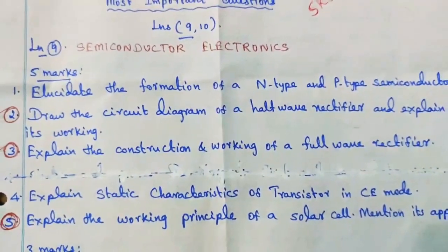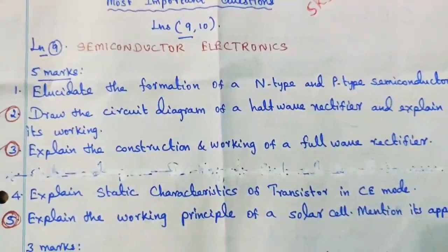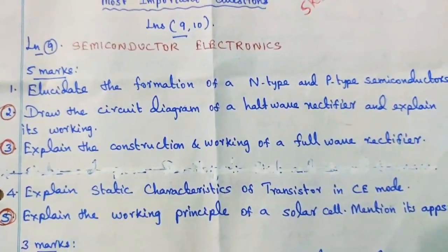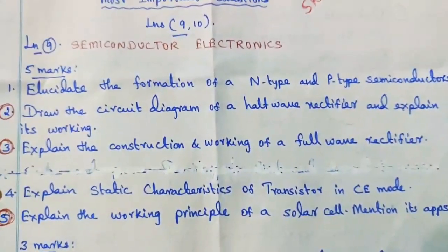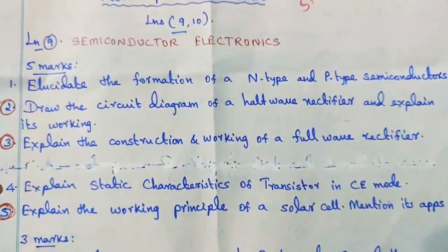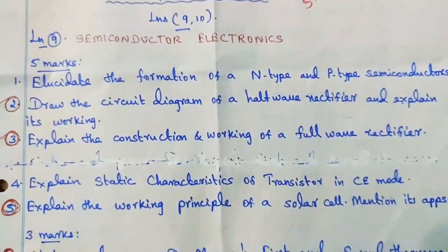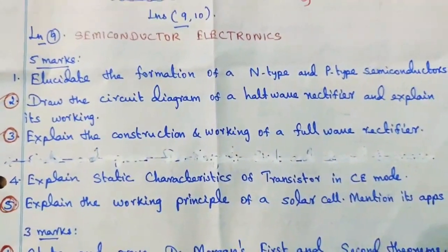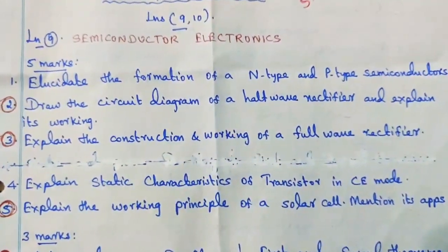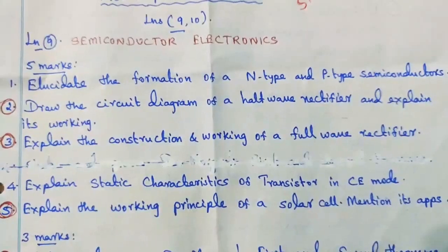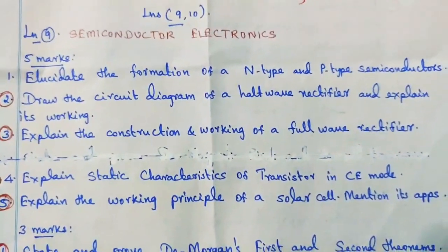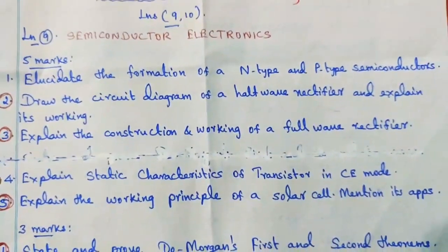4th question: explain the static characteristics of a transistor in common emitter (CE) mode. 5th question: explain the working principle of a solar cell and mention its applications.